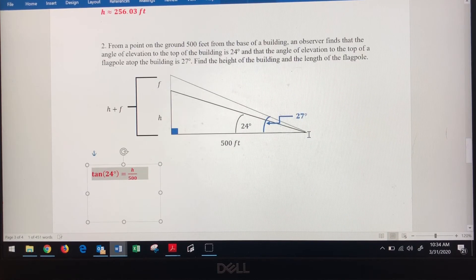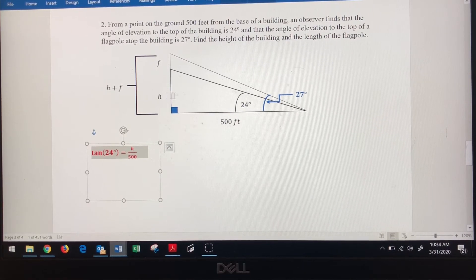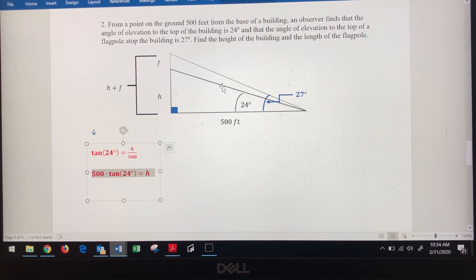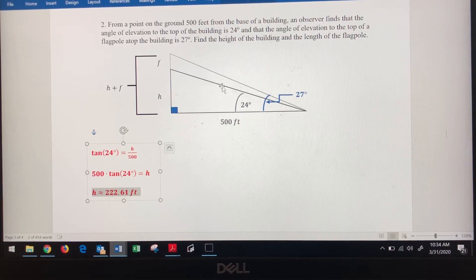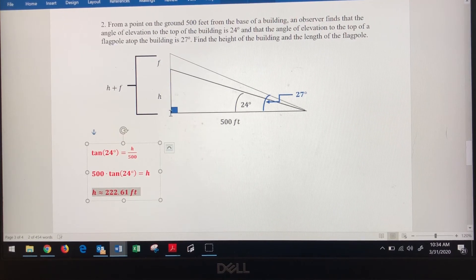So we're going to write our equation. We've got the tangent of 24 degrees equals h divided by this 500 feet. Pretty easy solution process. Multiply both sides by 500. The height of just the building is 222.61 feet. So that's just from the ground here up to the top of the building.